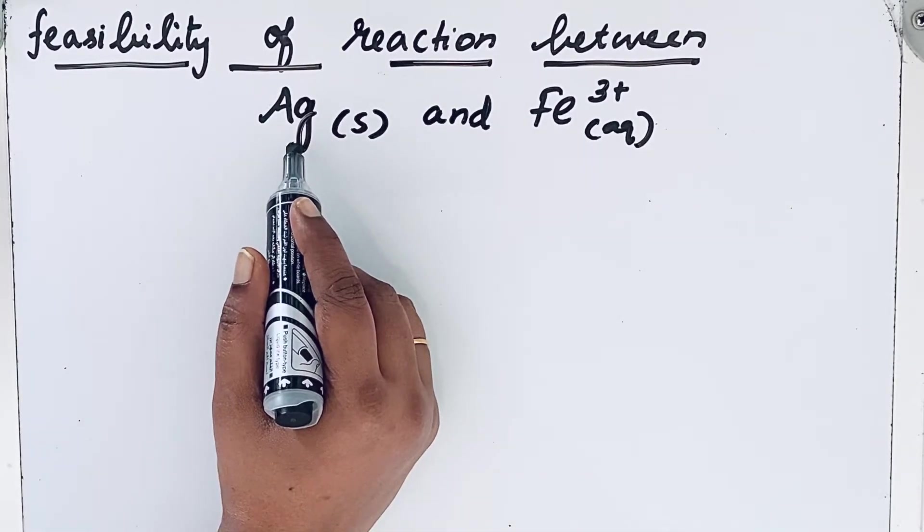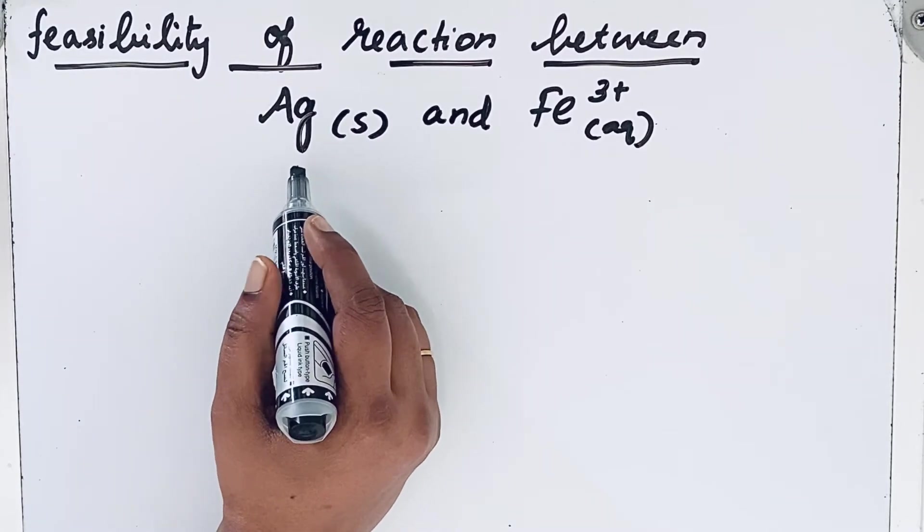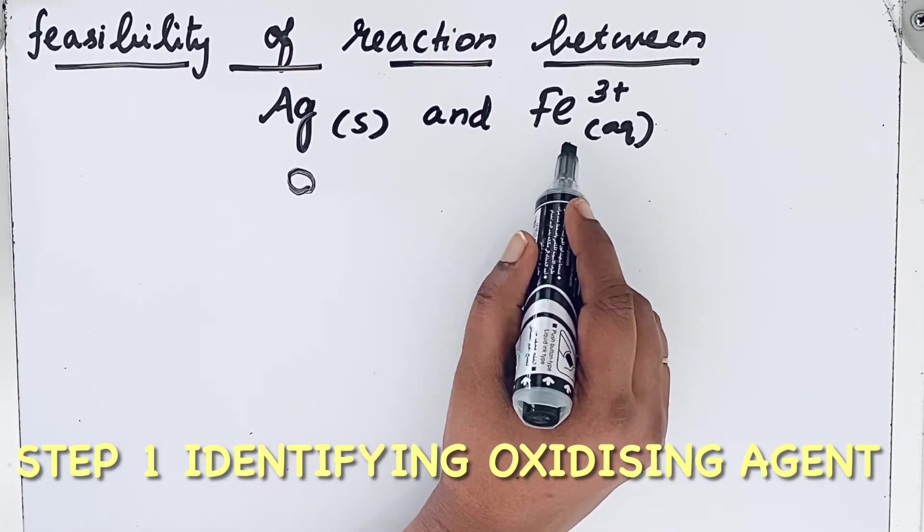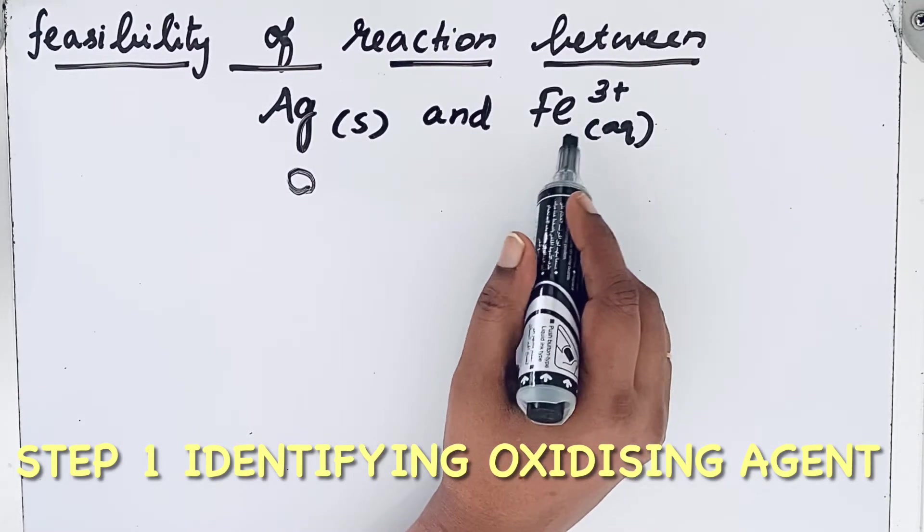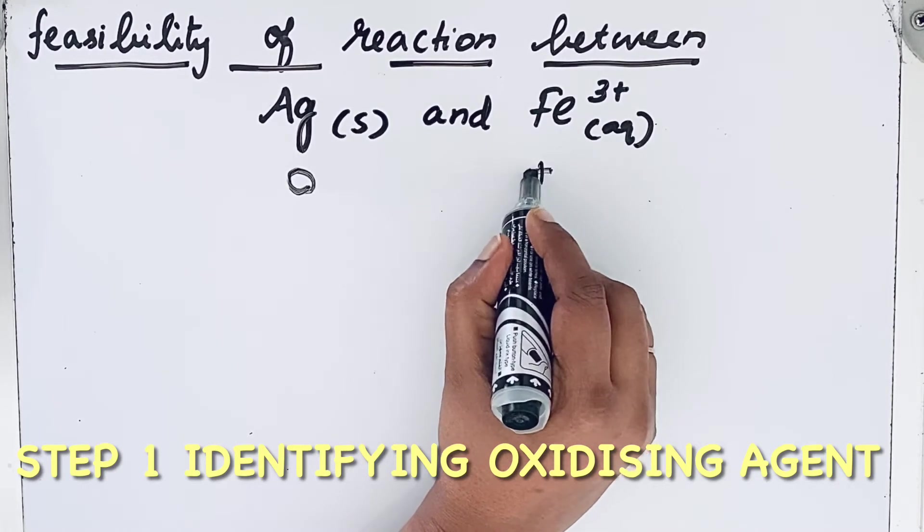Here, in Ag, silver is in uncombined state, so the oxidation number is zero. In Fe³⁺, it is a monoatomic ion, so the charge itself is the oxidation number, so plus three oxidation state.